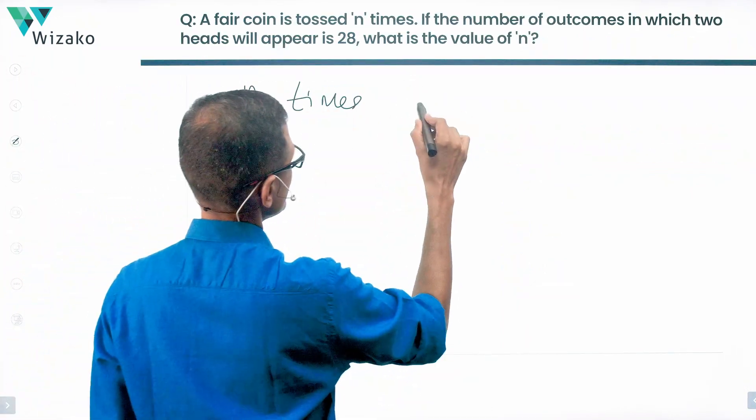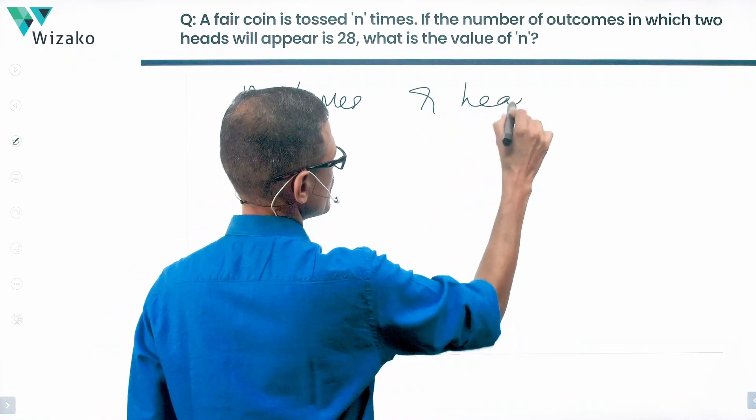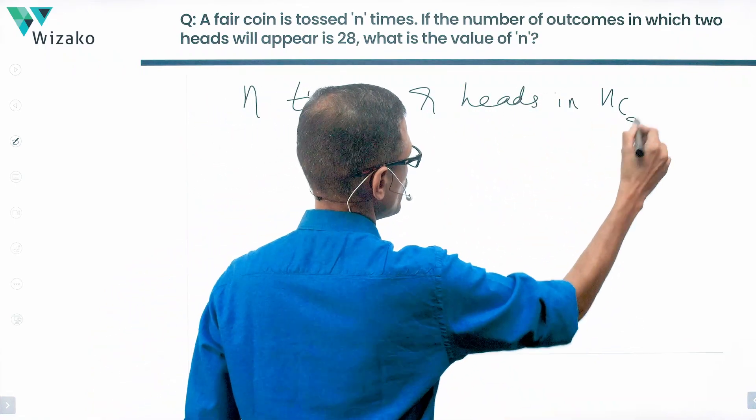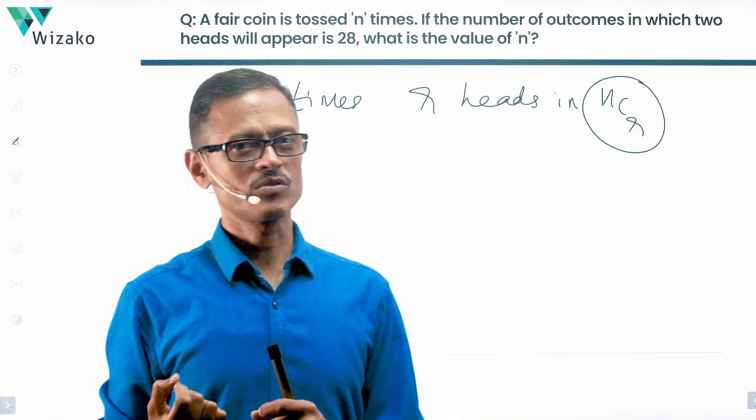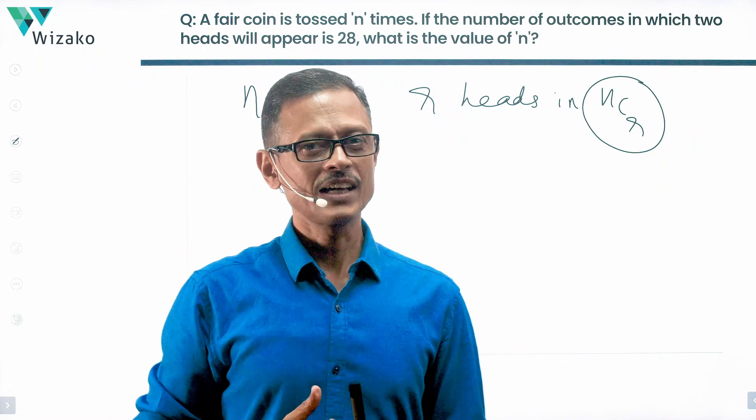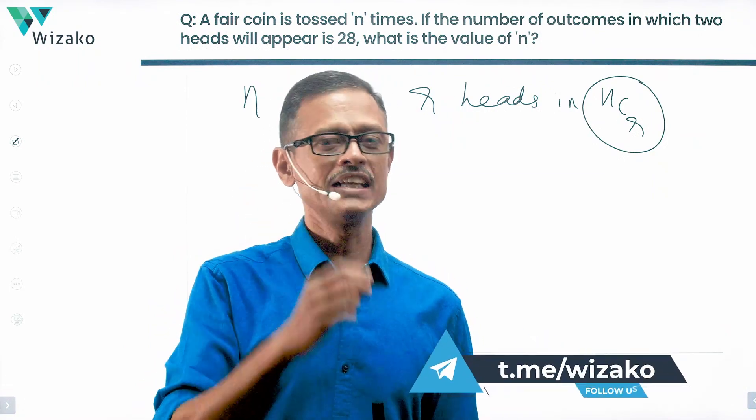If you toss a coin n times, then we will get r heads in nCr outcomes. This is a concept you need to know to solve this question. Tossing the coin n times, we know that the number of outcomes in which we have two heads...